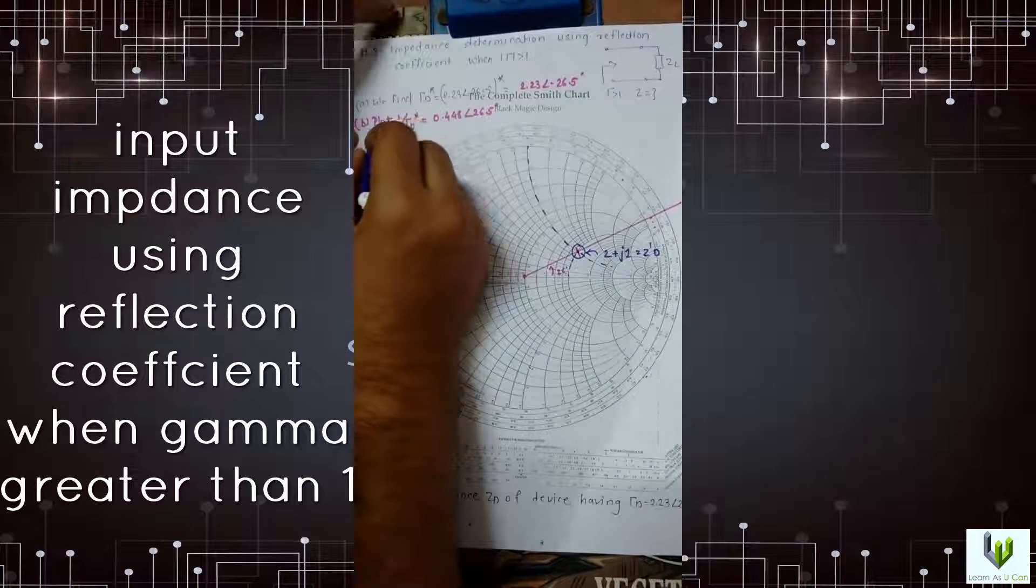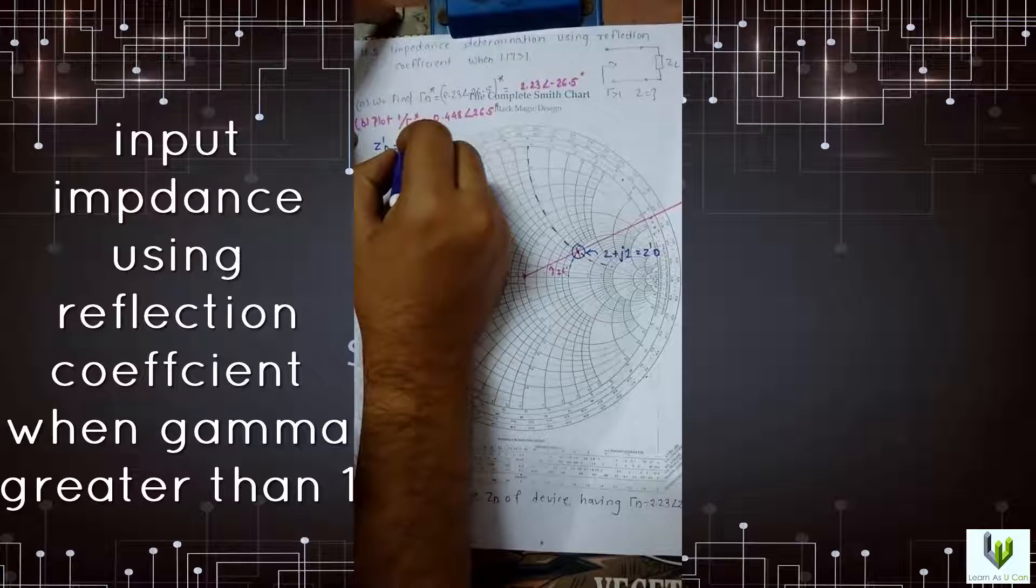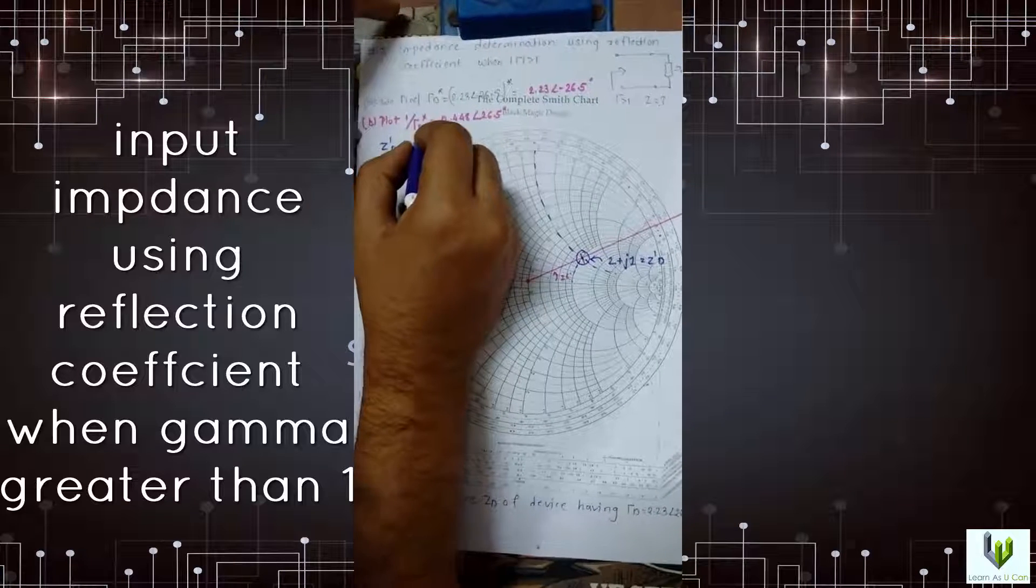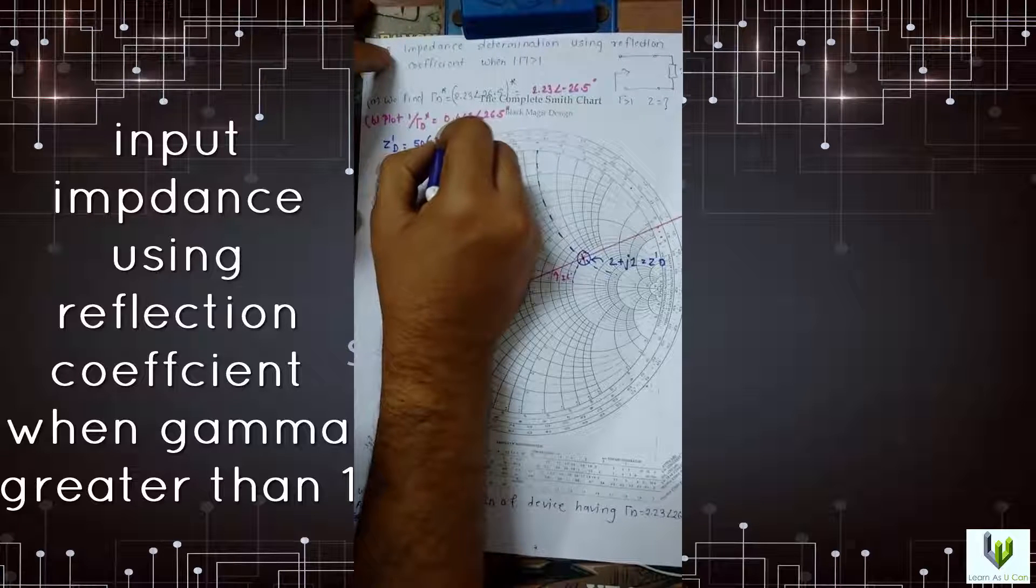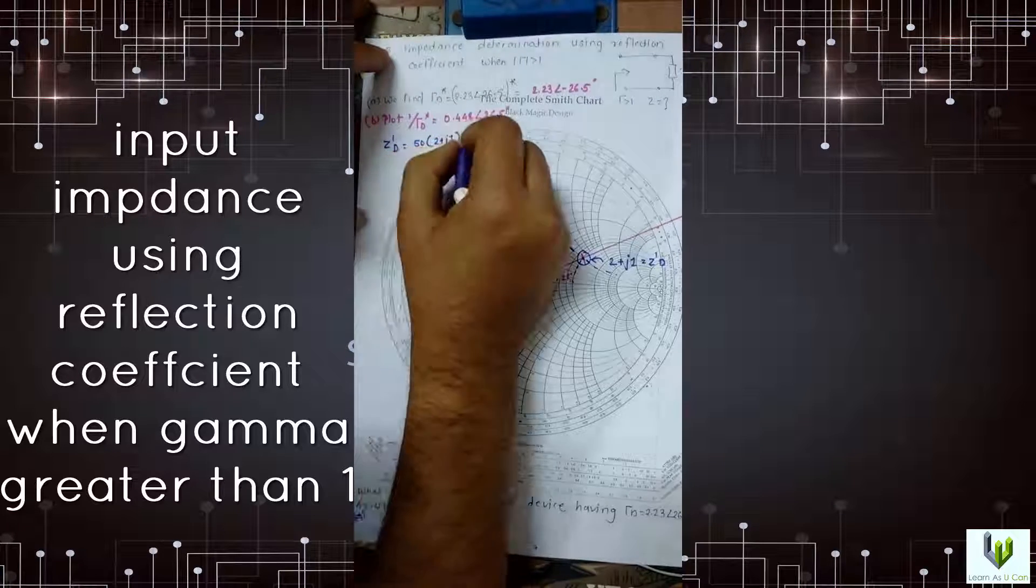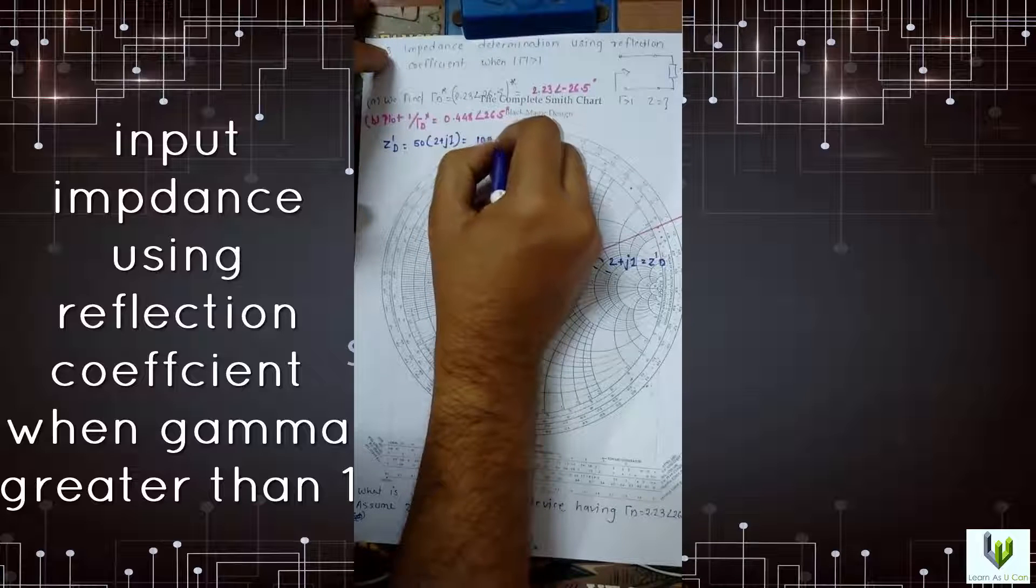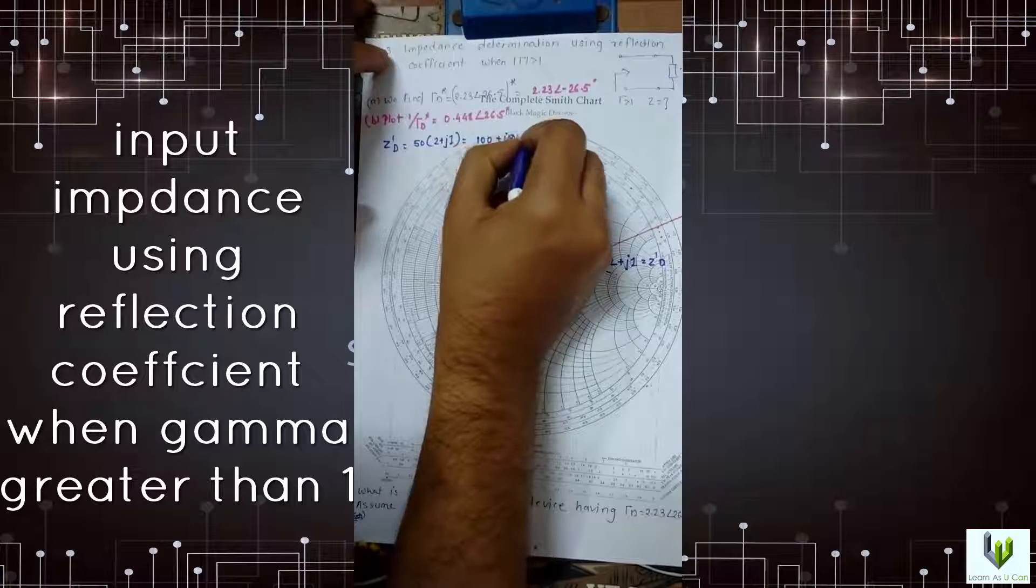So Z dash T is equal to 50 times 2 plus j1. We got 100 plus j50 ohms.